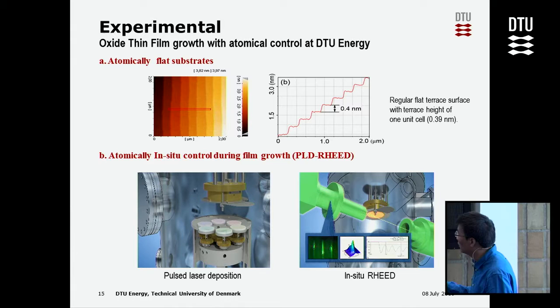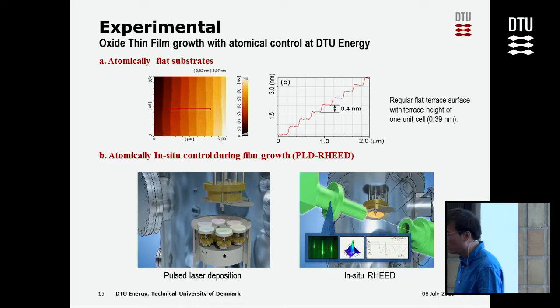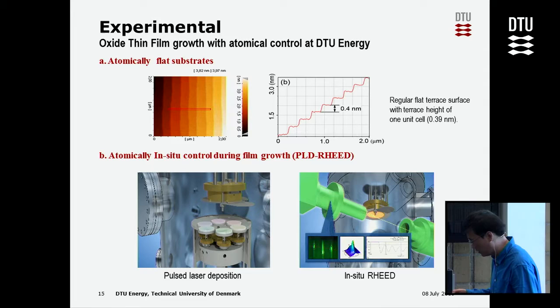At the same time, we monitor the film growth in situ using RHEED — we use an electron gun to direct electrons onto the substrate, and by monitoring the diffraction pattern we can control the film growth layer by layer. One RHEED oscillation corresponds to the growth of one monolayer of oxide. With this technique we can grow almost any oxide to use as a functional interface.